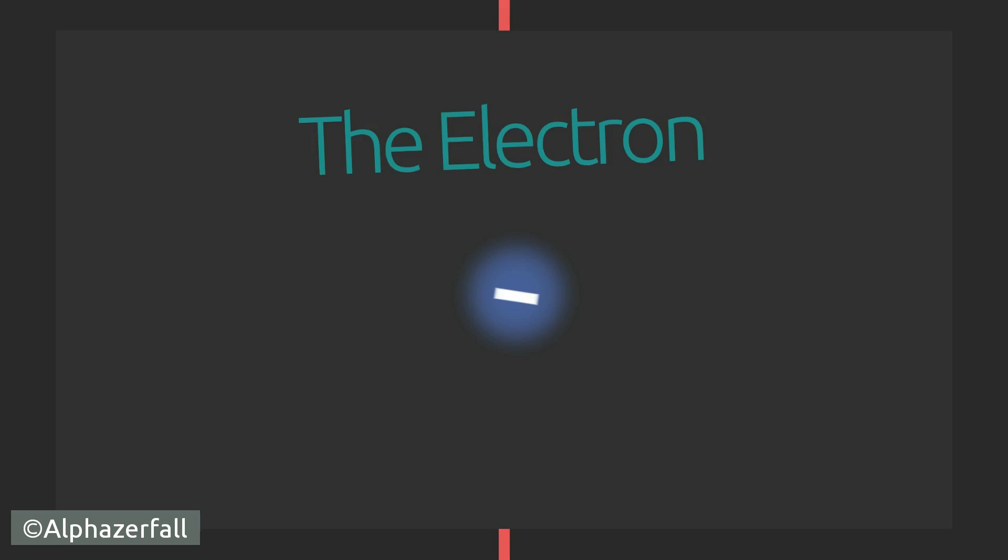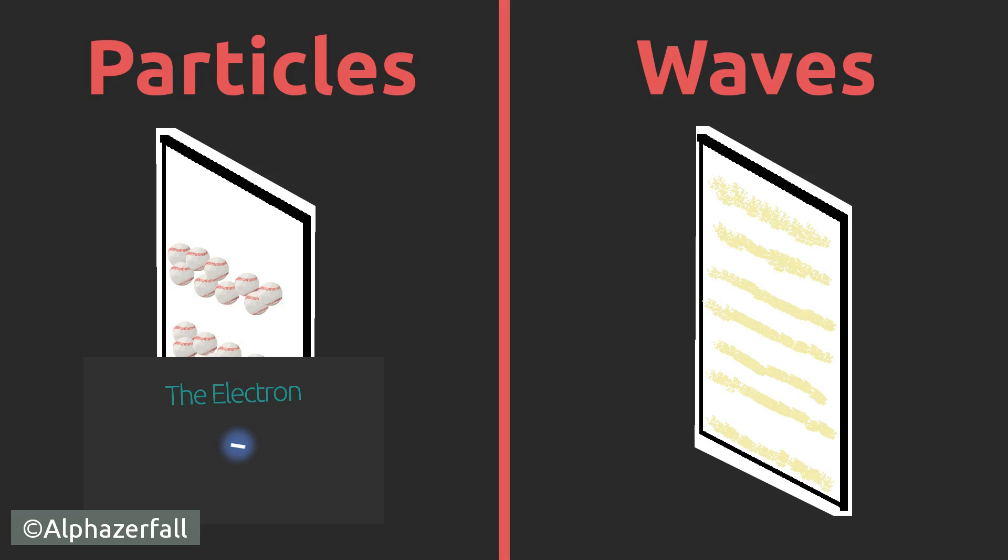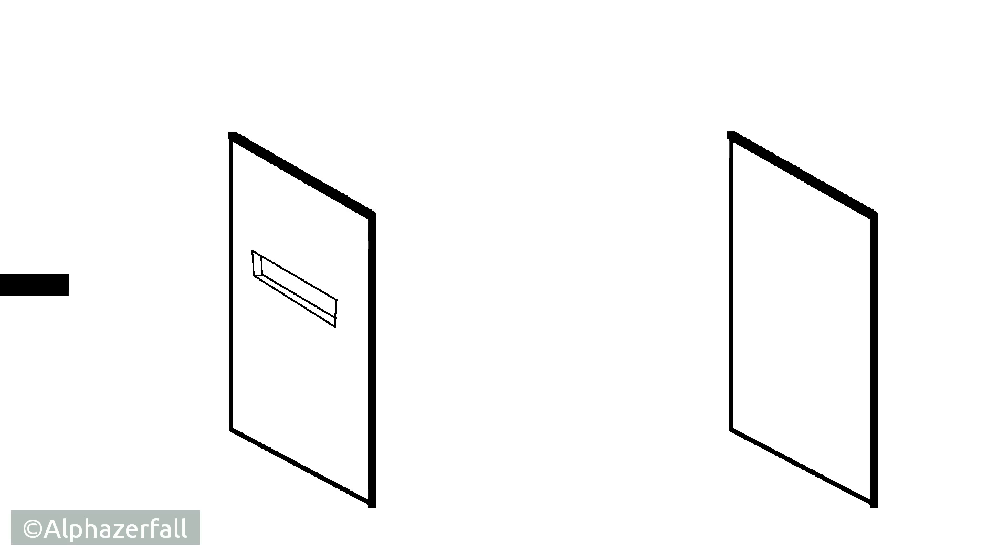School says that electrons are particles of the microcosm. It should actually be clear to define where they belong to in this chart. To make sure, let's test their behavior at the double gap.